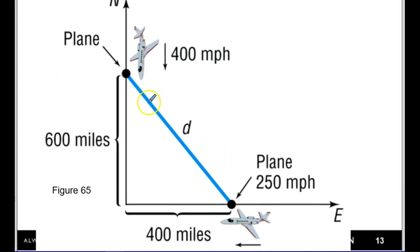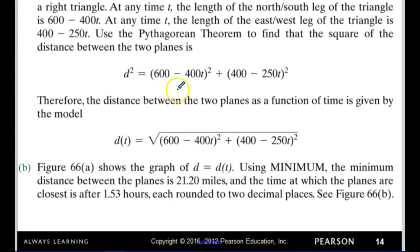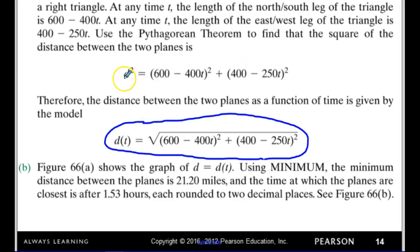We're going to use the distance formula, which is the same as the Pythagorean theorem, because we have a right triangle. At any time t, the north-south leg of the triangle is 600 minus 400t, because the first plane is going 400 miles per hour. Similarly, the east-west leg is 400 minus 250t. So I use the Pythagorean theorem — a squared plus b squared equals c squared — and take the square root of both sides to write the distance function.